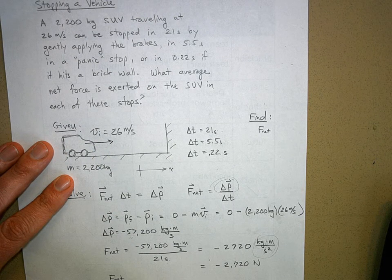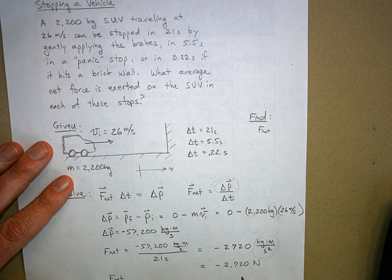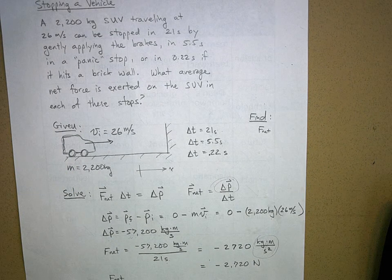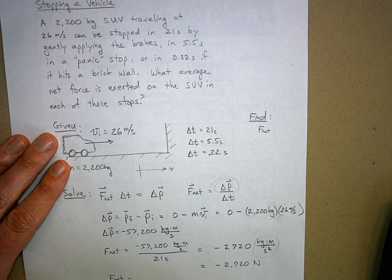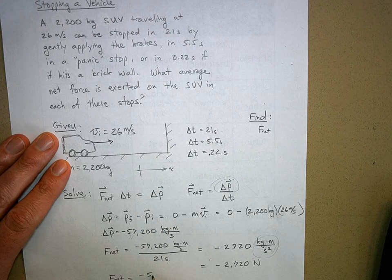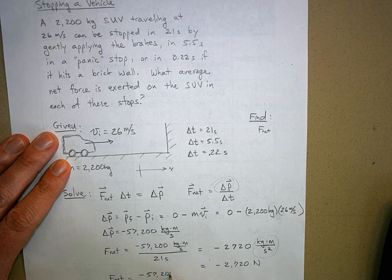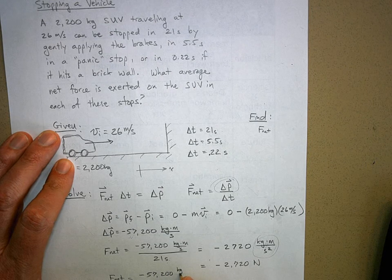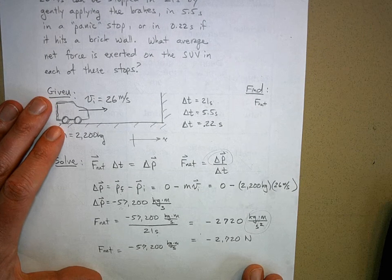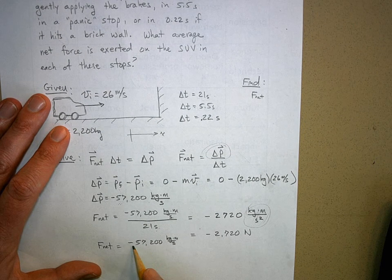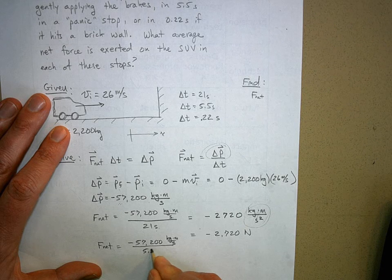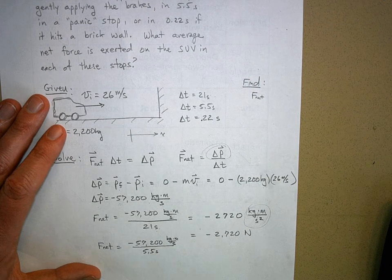That's not too bad. I mean, it is an SUV we're trying to stop here. So for the panic stop, we're going to divide it by 5.5 seconds. Notice that the amount of time is less.